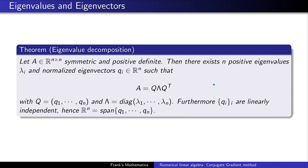Now we go into eigenvalue decomposition. We assume that A is symmetric and positive definite. Then there exist n positive eigenvalues λ_i and normalized eigenvectors q_i such that we can express A as Q Λ Q^T. Q consists of the eigenvectors, Λ is a diagonal matrix containing the eigenvalues λ_i, the q_i are linearly independent, and the inverse of Q is Q^T.